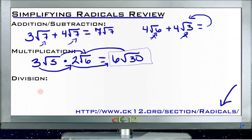For division, we have to get the radical out of the denominator. If we have, say, three roots of two over two roots of three, we need to simplify this by taking the root symbol and getting it out of the denominator of the fraction.